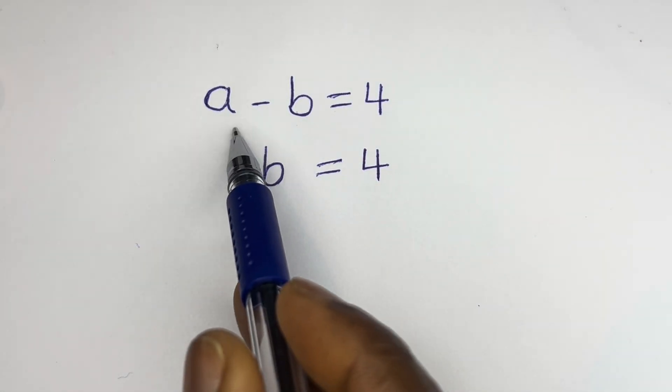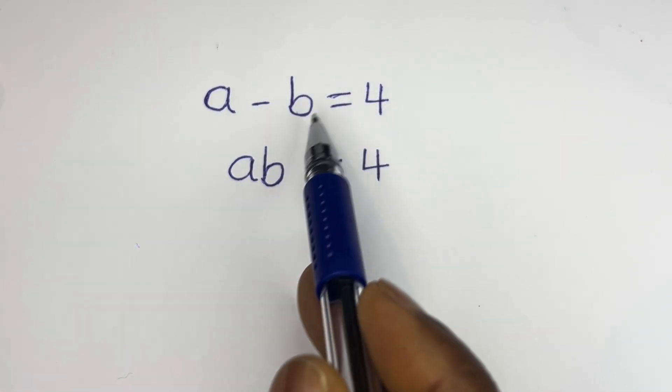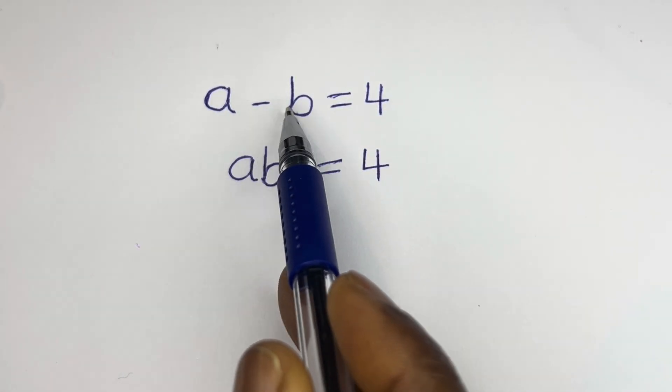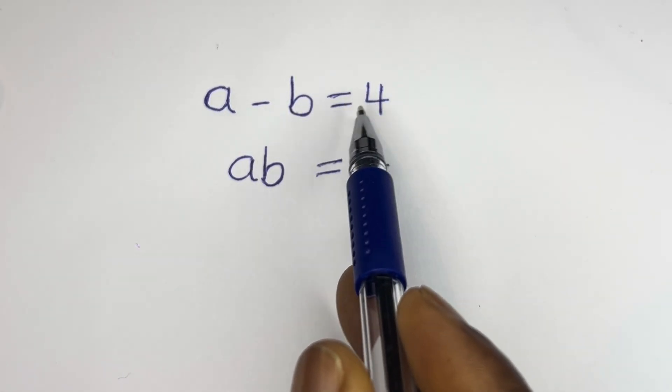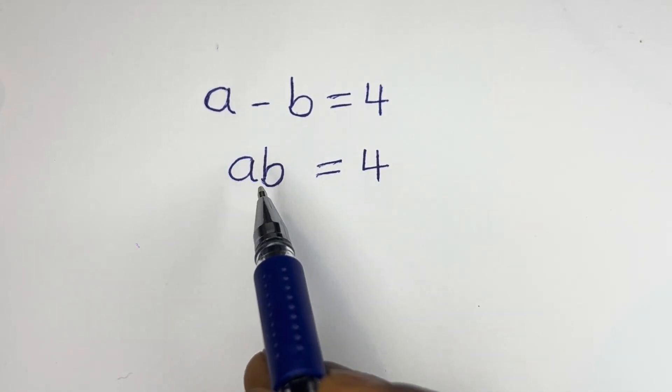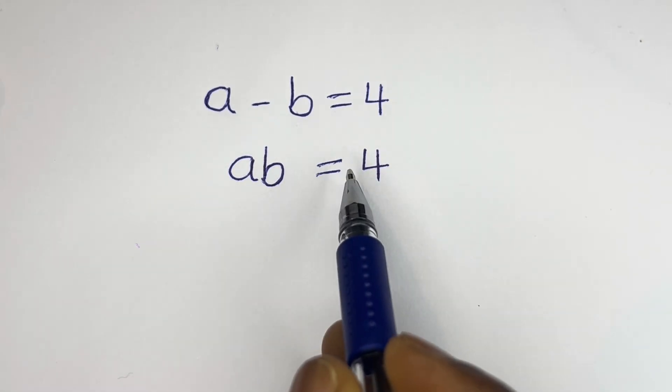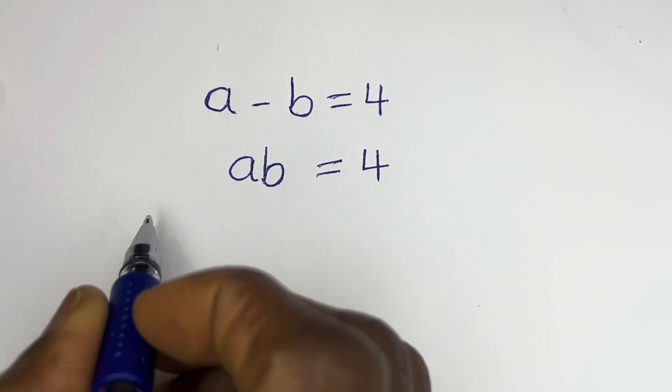Hello, how to solve for a and b in this equation: a minus b is equal to 4, and a b is equal to 4. Solution.